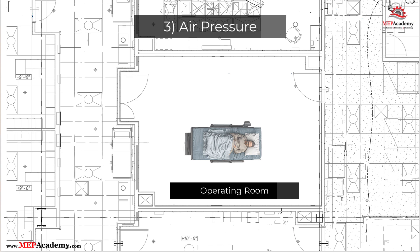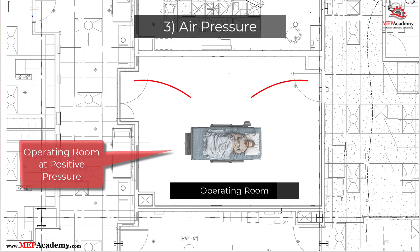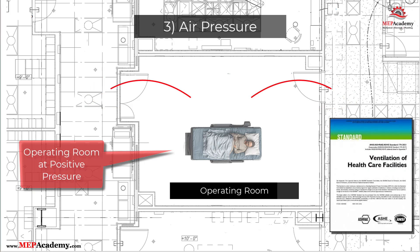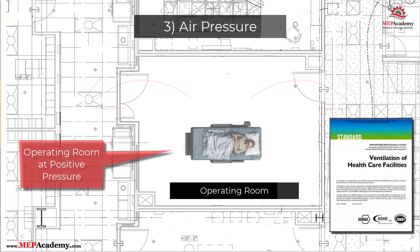Takeaway 3: Pressure relationships are engineered to prevent contamination. An equally important part of OR HVAC design is managing room pressure relationships. In a surgical suite, air should always flow from the cleanest areas to the less clean areas. That means the operating room itself must be kept at a positive pressure relative to adjacent spaces. According to ASHRAE 170-2021, the operating room must be maintained at a minimum positive pressure differential of +0.01 inches water gauge relative to adjacent areas, including corridors, ante rooms, scrub areas, and nursing stations.